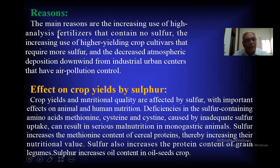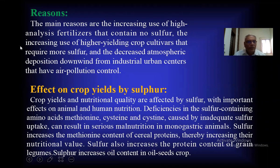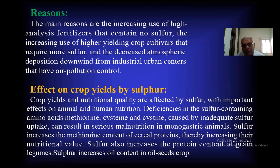The main reasons for sulfur deficiency are the increasing use of high-analysis fertilizers that contain no sulfur — we are using urea and DAP which do not contain sulfur. Another reason is the increasing use of high-yielding crop cultivars that require more sulfur. High-yielding varieties have been developed and as crop yield increases, they obviously require more sulfur uptake. Additionally, there is decreased atmospheric deposition downwind from industrial and urban centers that have air pollution controls.